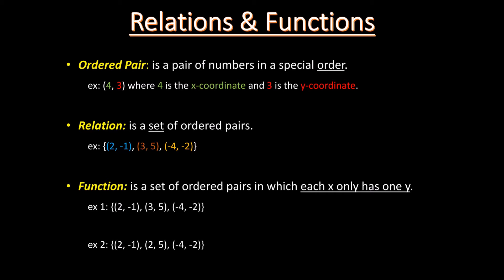Let's look at some definitions. First is ordered pair. It is a pair of numbers in special order, which means we have two numbers and we write them in a specific order. One common example is a coordinate point — for example, (4, 3), where 4 is the x-coordinate and 3 is the y-coordinate. We write 4 and 3 inside parentheses, and we always write the x-coordinate first and the y-coordinate second.